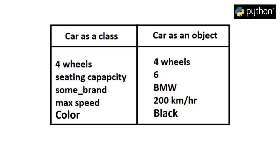For example, let's say we have a car. If we define car as a class, then every car, no matter what brand it is or which year it is launched, will have 4 wheels, some seating capacity, and a colour. But when we say that a car has a black colour, can accommodate 6 people, and the brand is BMW, then this car is an object of a class called car. Classes are basically the general definition which would be the same throughout every object.